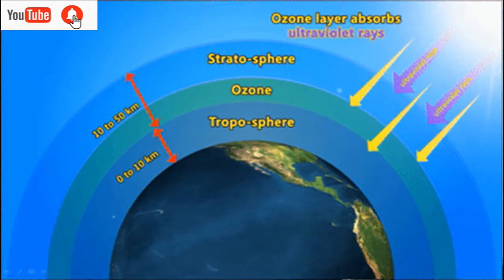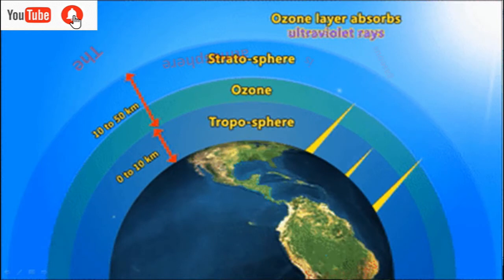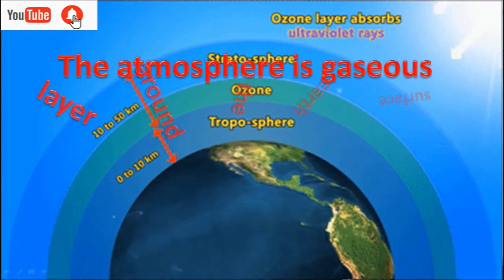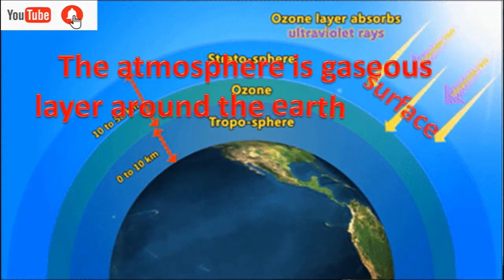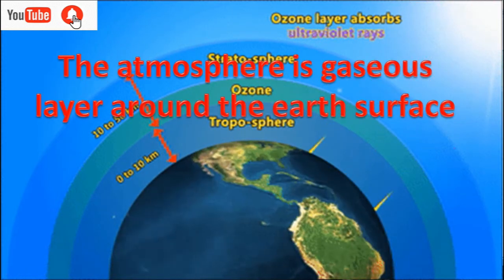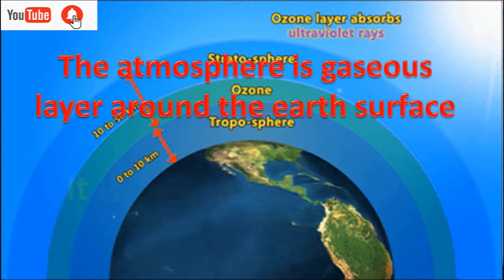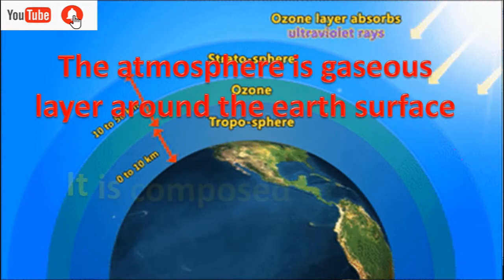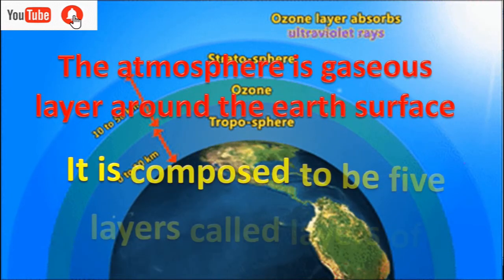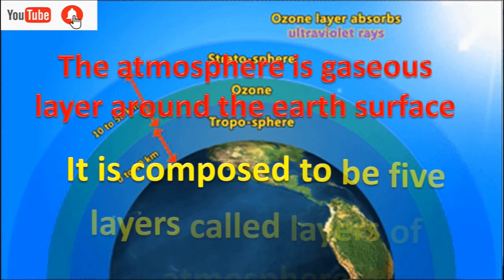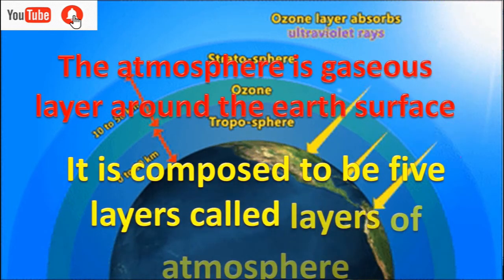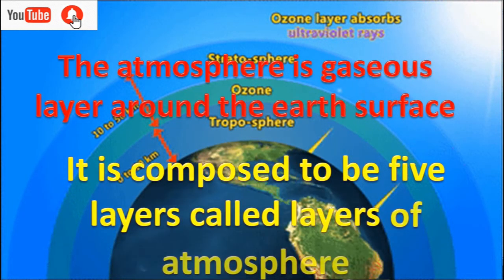Atmosphere. The gaseous layer around the earth's surface is called atmosphere. It is composed of five layers, called layers of atmosphere.